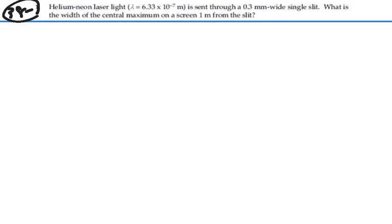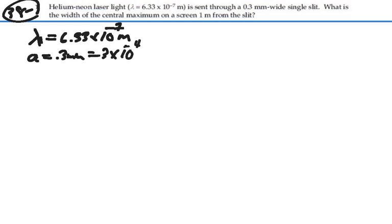So let's write down what we've got. We've got a wavelength of 6.33 times 10 to the minus 7 meters. We have a slit width of 0.3 millimeters, which is 3 times 10 to the minus 4 meters. And we have a length to the screen of 1 meter.